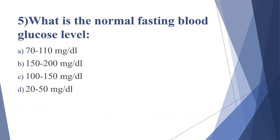Fifth question: what is the normal fasting blood glucose level? Option A: 70 to 110 mg per deciliter, option B: 150 to 200 mg per deciliter, option C: 100 to 150 mg per deciliter, option D: 20 to 50 mg per deciliter. Answer is option A, 70 to 110 mg per deciliter.